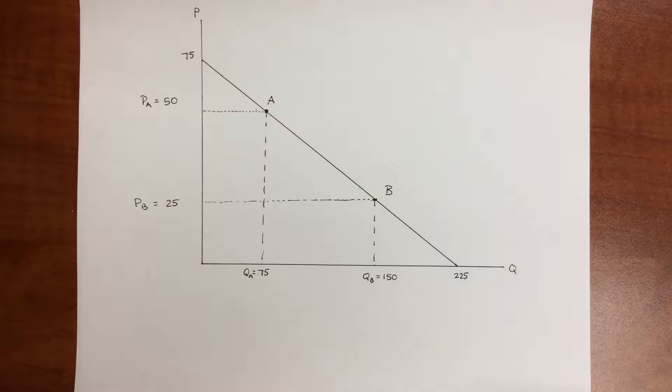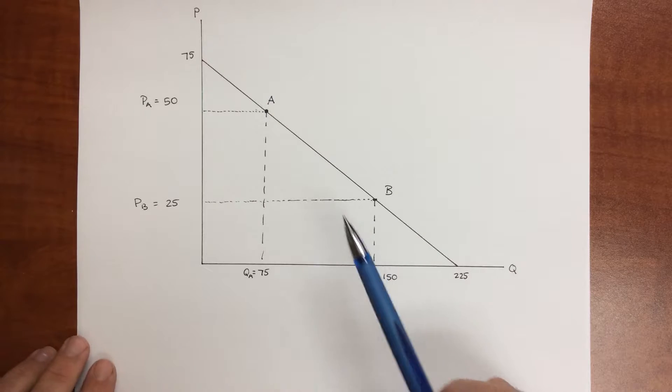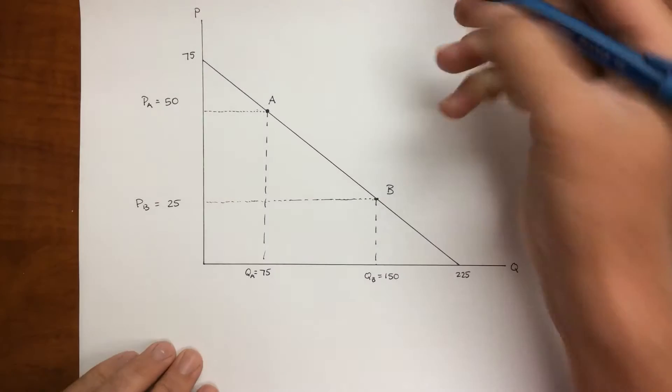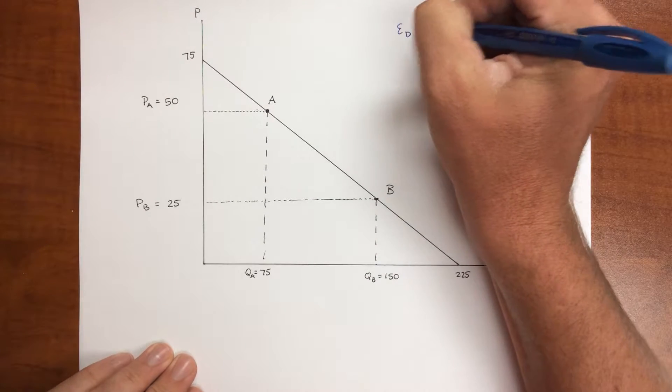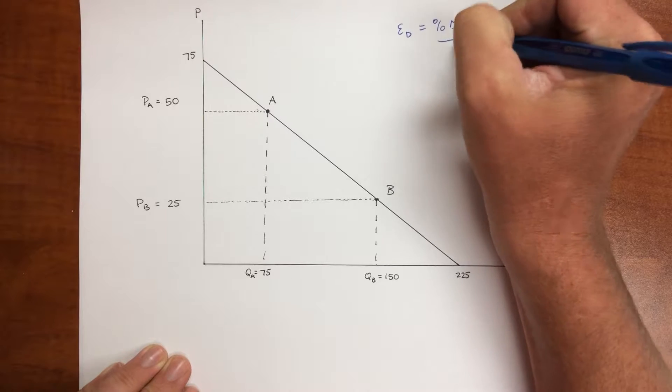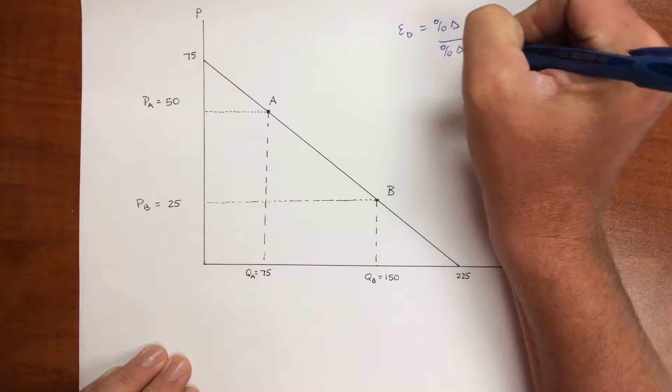Here's a third example of price elasticity of demand. What we want to look at is what happens when we change from going from point A to point B and point B to point A. Remember that our equation for elasticity of demand is equal to the percentage change in quantity being driven by a percentage change in price.